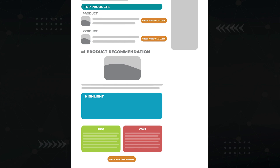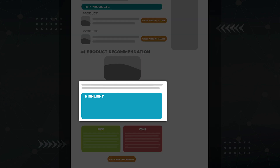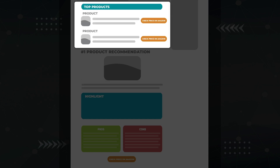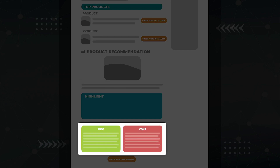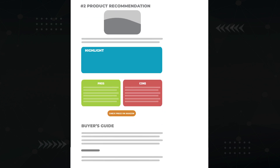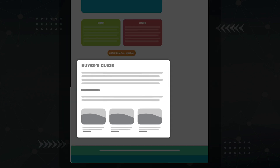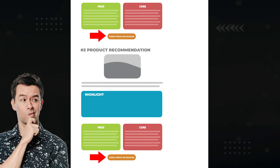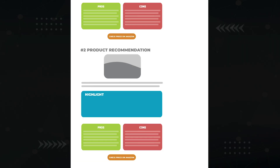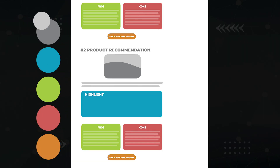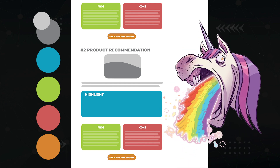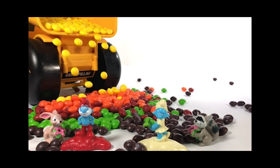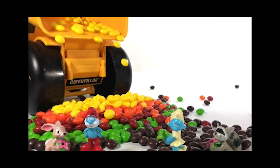Now I want to zoom out and take a look at this entire layout as a whole. There's a detailed product description for the number one product. It's a shame that this product wasn't labeled number one in the table at the top. Typical pros and cons, then product number two and so forth with the buyer's guide at the bottom. Do the call to action buttons stand out to you? Do they draw your eye? Of course not, because there's a billion colors on this page. How can anything stand out when it looks like a unicorn vomited on this layout?